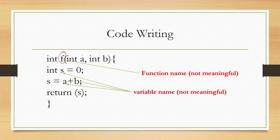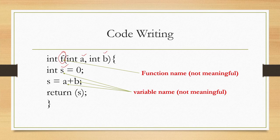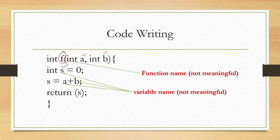Similarly, the variable names a, b, and s should convey the purpose of those variables. Instead, here we have given arbitrary names that do not convey any meaning. Suppose we had named them 'integer_first_number' and 'integer_second_number' — that would give some idea that these are the two inputs. Similarly, instead of s we could have written 'sum', which would be a better naming convention than using an arbitrary character to represent the variable.